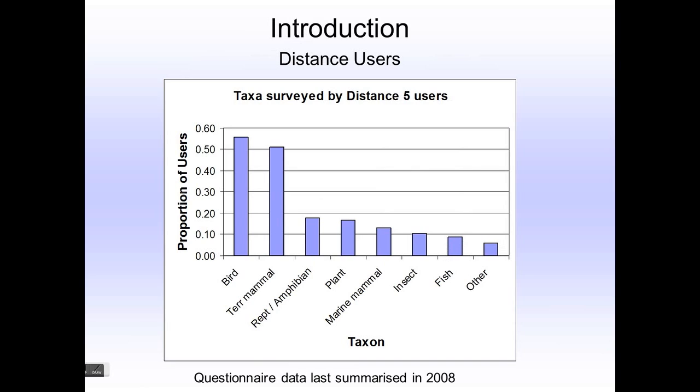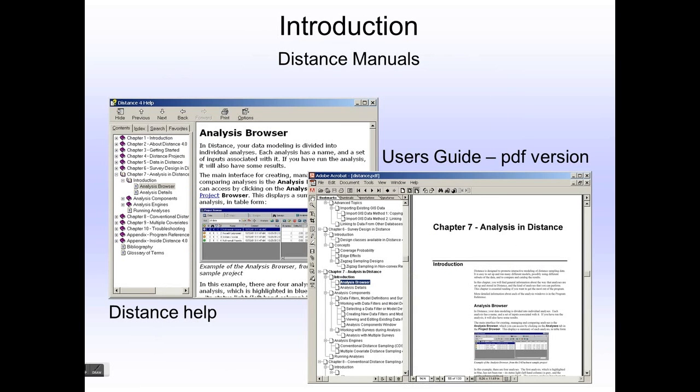The last time we took a summary of what sort of things people used Distance to analyze, we found that the vast majority of them were biologists that worked in the terrestrial realm on terrestrial birds and mammals. But many of you fall into these other categories, and I think this reflects perhaps the number of biologists in these relative fields rather than necessarily applicability of distance sampling methods.